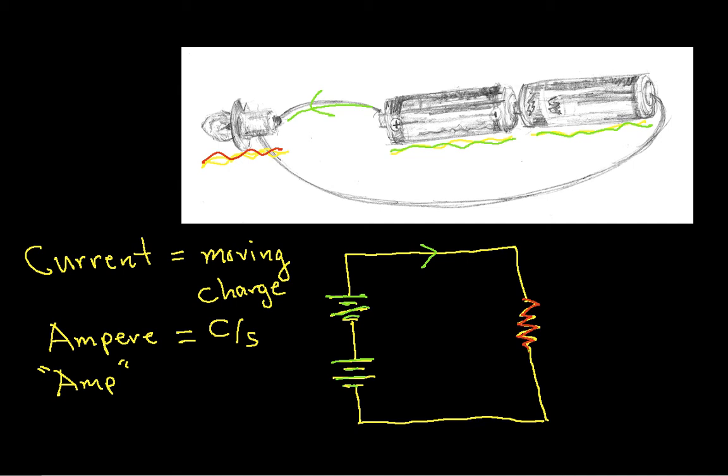Now this charge could be either positive or negative because electrons have a negative charge and protons have a positive charge. As charge carriers are moving around in a circuit, you may have negative electrons moving or you may have positive ions. Protons tend to not move around that much, but ions might be moving.